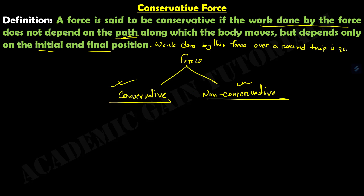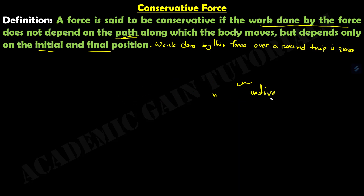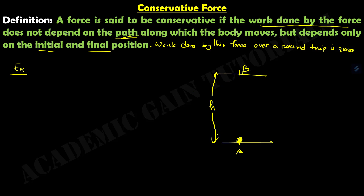Let us take an example. Suppose there are two points — point A and point B — and an object of mass M is raised from point A to point B whose vertical height is H. The transfer of the object along path 1 goes from A to B in one way, and path 2 is a different route from point A to point B.